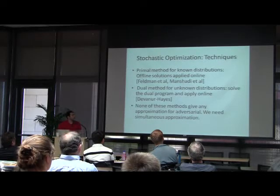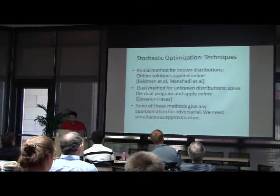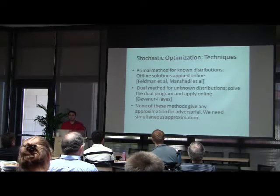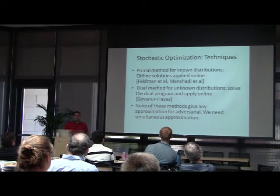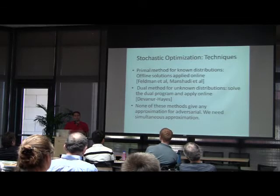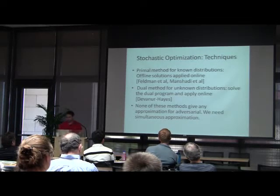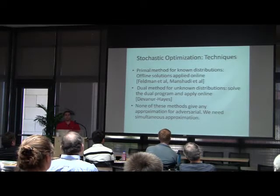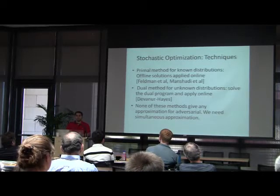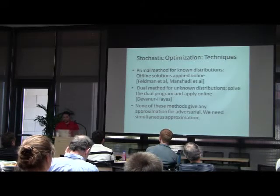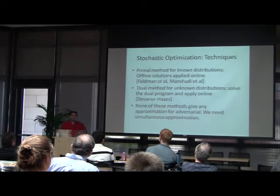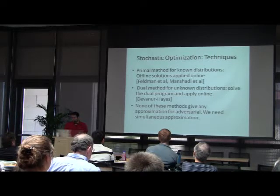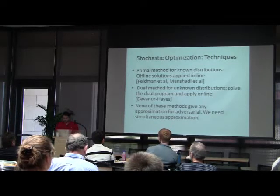There are different ideas for these settings. There are primal methods for known distributions: when you know the distribution of the arriving online nodes, you can compute the offline solution and based on that allocate future balls. There are also dual methods for unknown distributions, where you use a small fraction of nodes at the beginning to estimate the dual variables and use that to allocate future balls. But none of these techniques give a good competitive ratio for the adversarial setting.